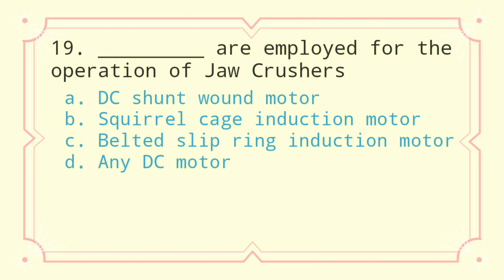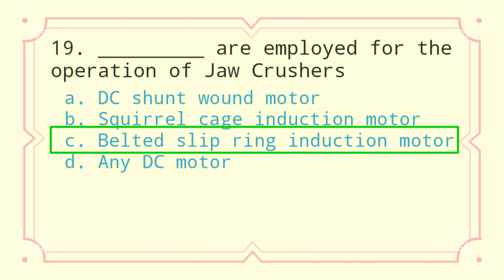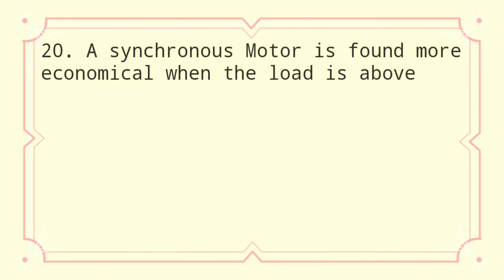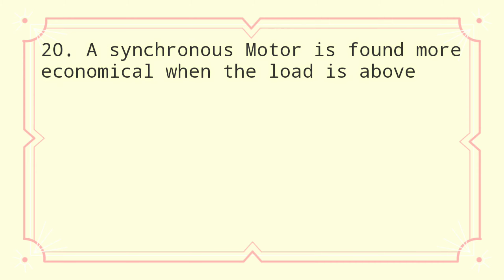Question 19: These are employed for the operation of jaw crushers. a) DC shunt motor, b) squirrel cage induction motor, c) belted slip ring induction motor, d) any DC motor. The correct answer is belted slip ring induction motor.